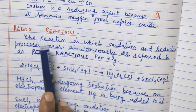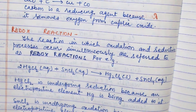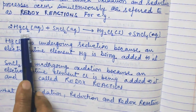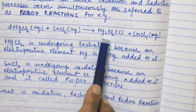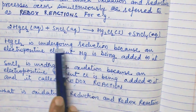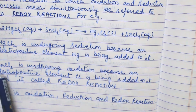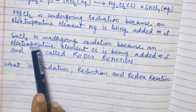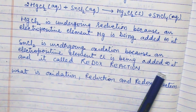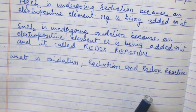Now, what is a redox reaction? A reaction in which oxidation and reduction processes occur simultaneously is referred to as a redox reaction. For example, in this reaction HgCl2 undergoes reduction because Hg2+ is reduced to Hg1+, so an electropositive element is being added. Here tin chloride undergoes oxidation because an electropositive element is being added to it. It is called a redox reaction because both reduction and oxidation take place in one reaction.